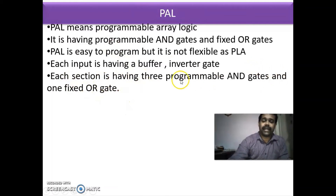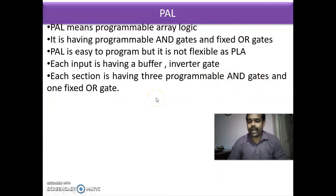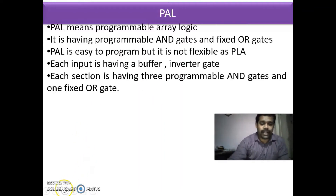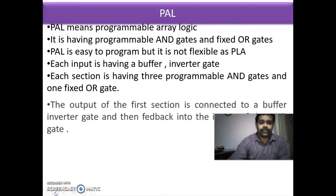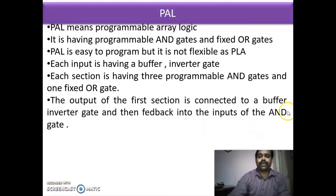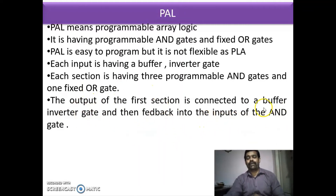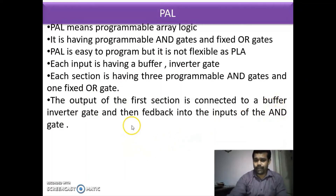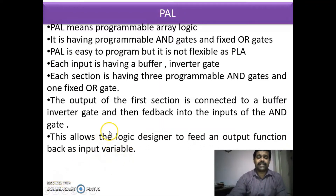Each section has three programmable AND gates and one fixed OR gate. In PAL you have many sections, each with three programmable AND gates and one fixed OR gate. The output of the first section is connected to a buffer inverter gate and then fed back into the input of the AND gate. This allows the logic designer to feed an output function back as an input variable.